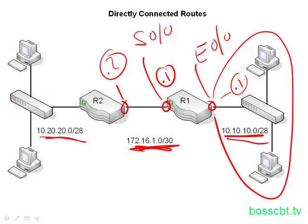Over here on the right-hand side, we have another subnet for the local area network. On this Ethernet interface, we use .1 in this subnet — 10.20.20.1 — in order to number the interface on R2. So we're going to focus on router one and look at the directly connected routes on it. There are two interfaces: Ethernet 0/0 and serial 0/0.